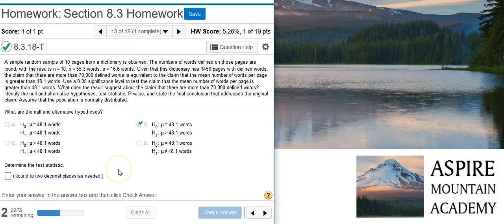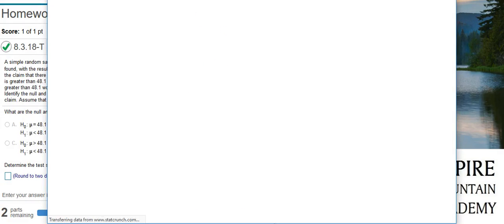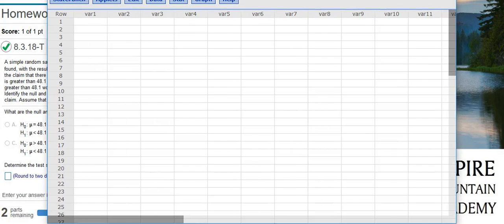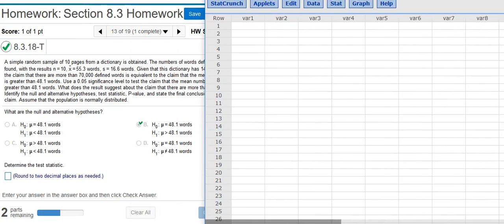The second part of this problem asks us for the test statistic, and to find the test statistic we're going to pop out StatCrunch. I'll take this window and I'm going to resize it so that we can see better what's going on here.